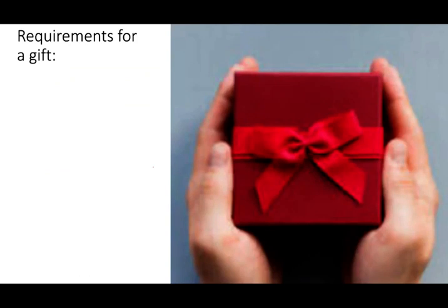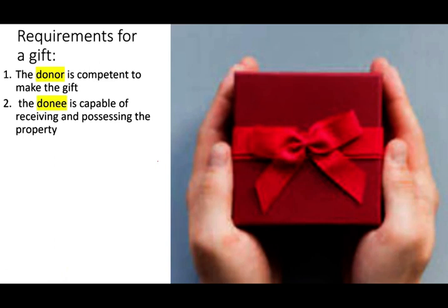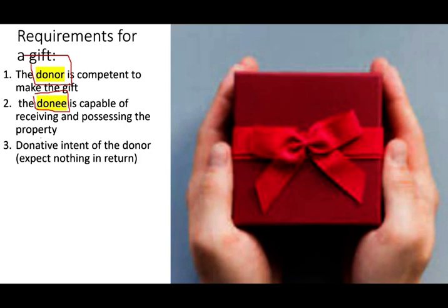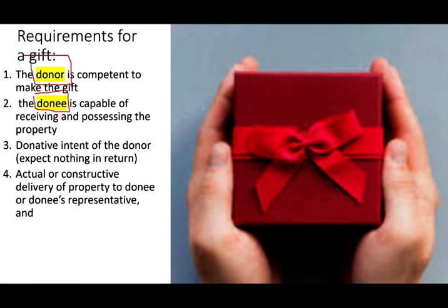Requirements for a gift — there are certain requirements we need to be aware of. First, the donor is competent to make the gift — the donor knows what they're doing. They might test you on this on the CPA exam. The donee is capable of receiving and possessing the property. Think of the donor as the person giving the gift and the donee as the person receiving it. There is a donative intent of the donor — the donor doesn't expect anything in return. It's yours; you don't have to give anything back or provide any service.